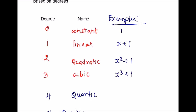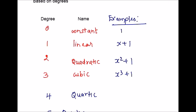For degree equal to 4, you can write the expression with x to the fourth. Just have a glance over these examples. For quartic, I have written an expression with degree 4, and for quintic, the degree is 5. I have written examples based on the degrees — please have a glance and you will have a clear idea.